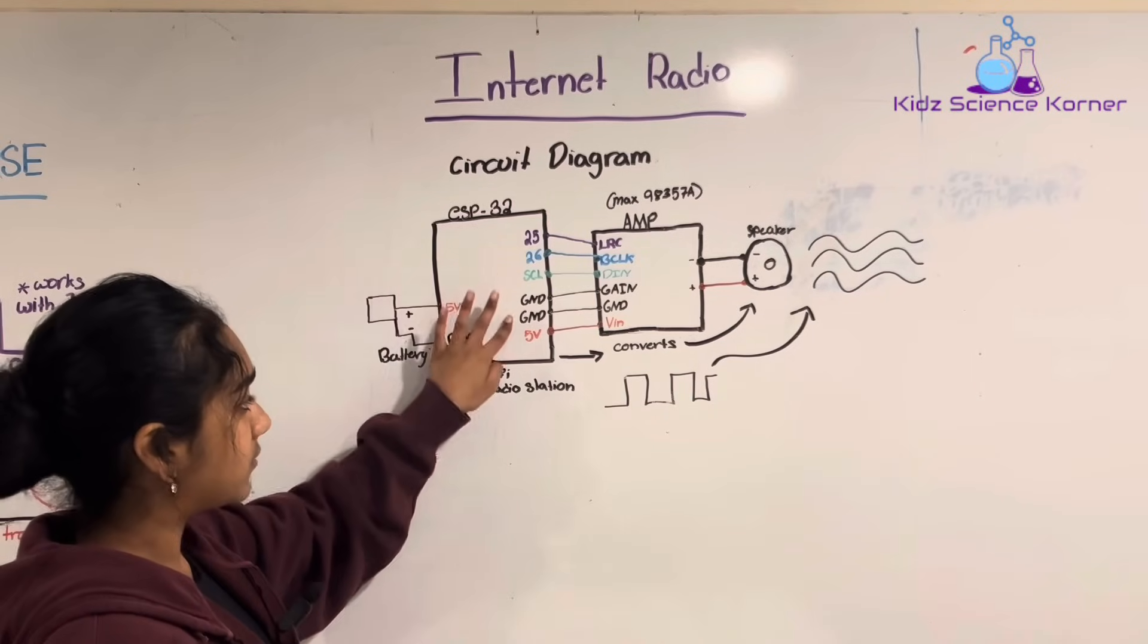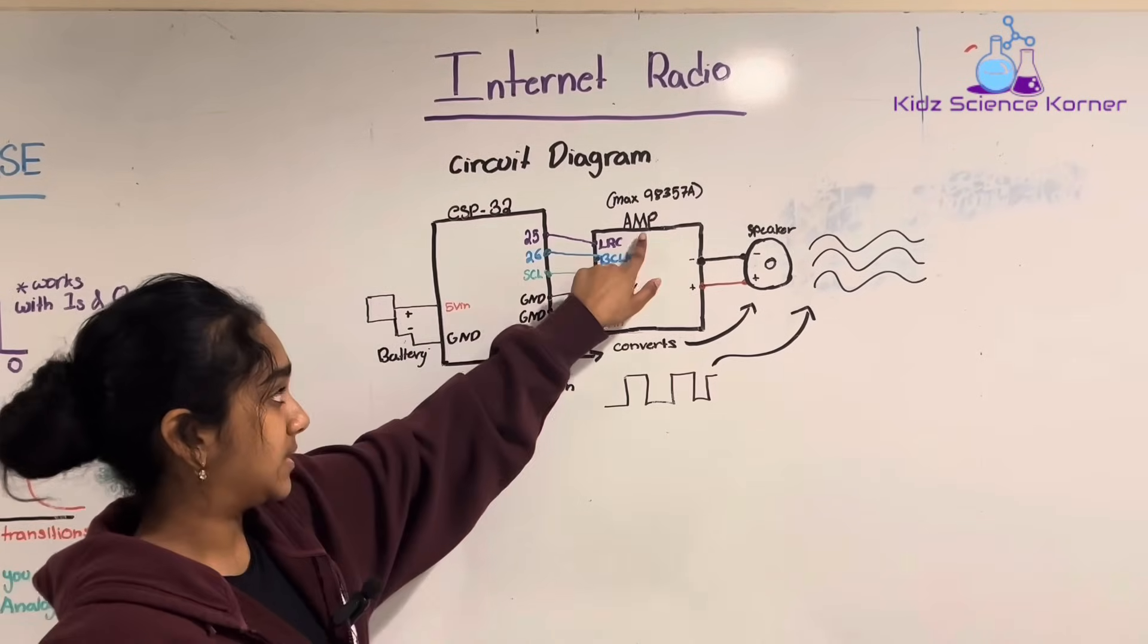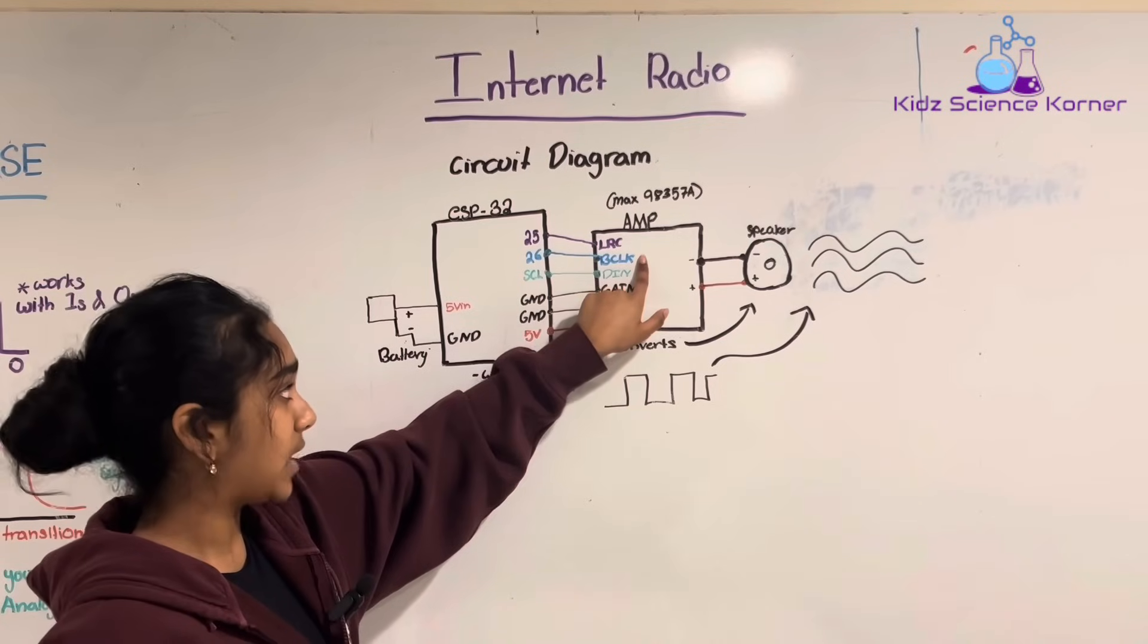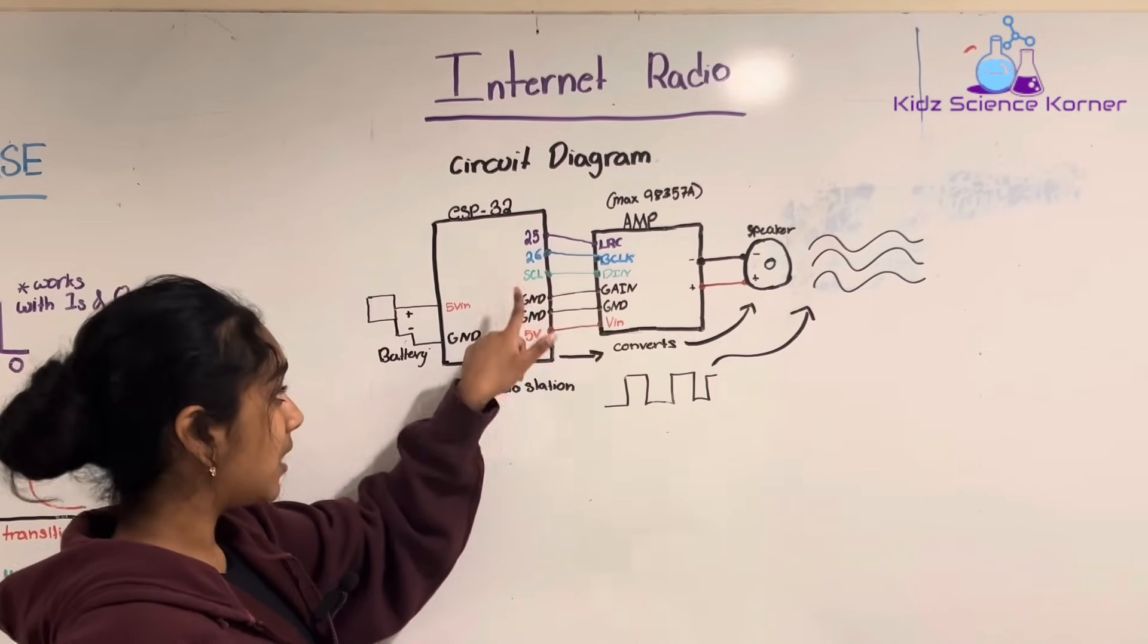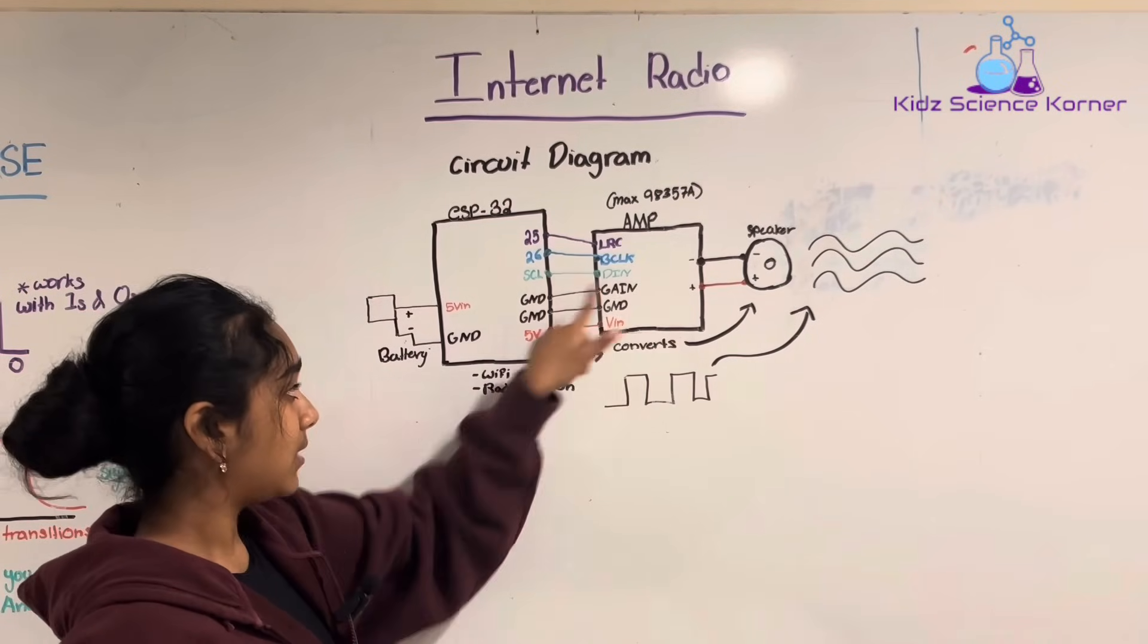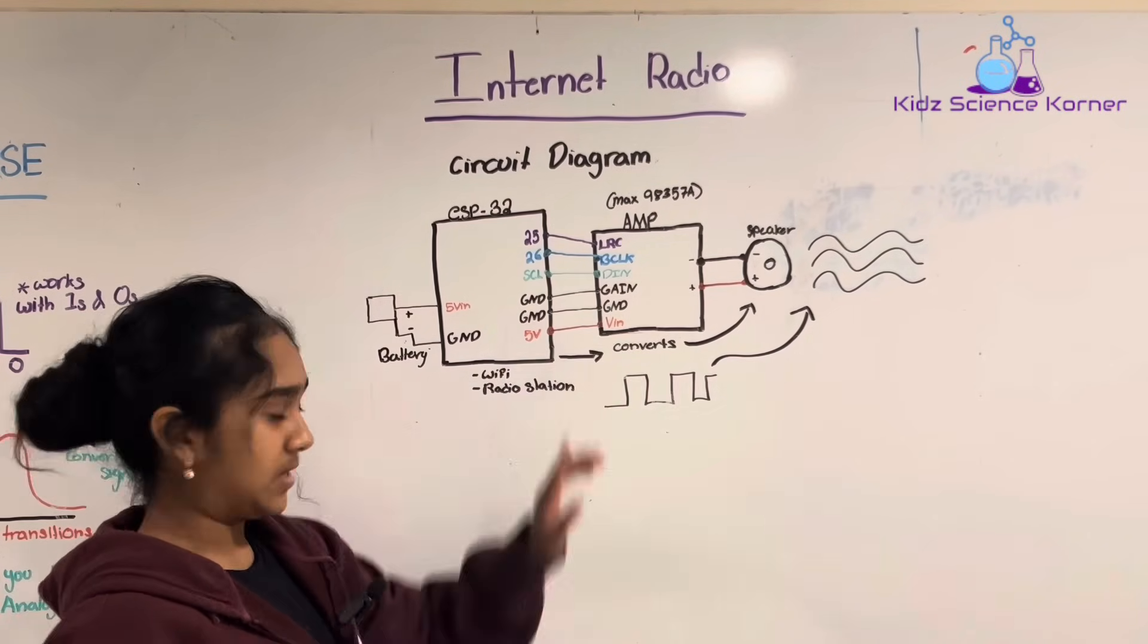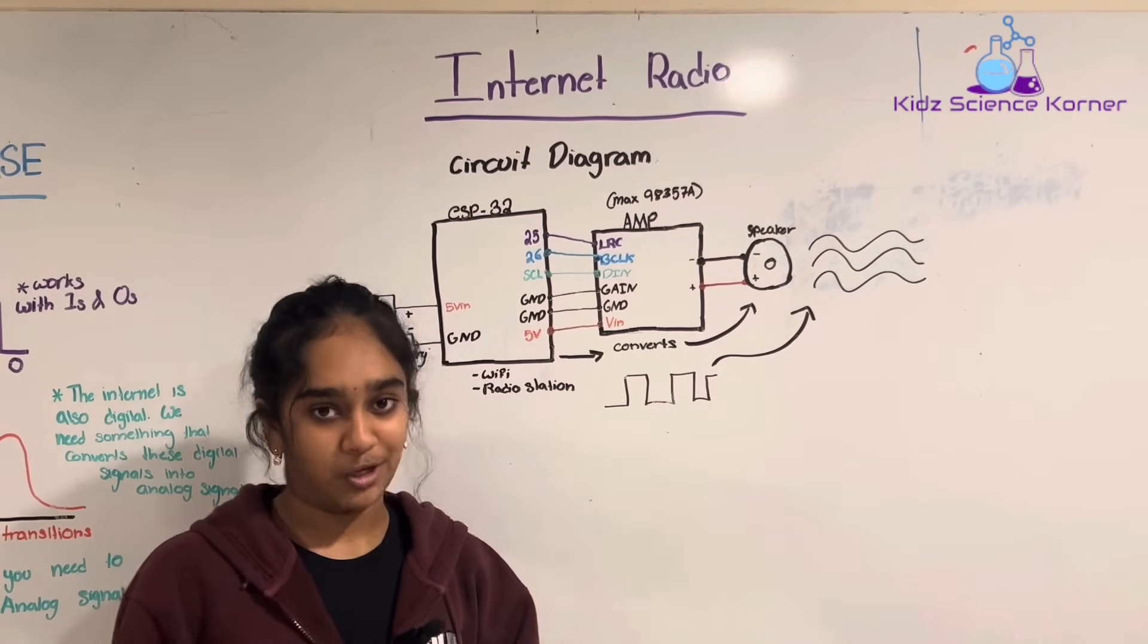So there are different ports here that these wires are connected to. There's GPIO25, and that's connected to LRC. There's GPIO26, which is connected to BCLK. There's SCL, which is connected to DIN. There's ground connected to gain, and then ground is connected to ground on one side. And then 5 volts is connected to VIN. And we'll get to all of that, and you'll get to see how all of that works when we actually start to build this project.